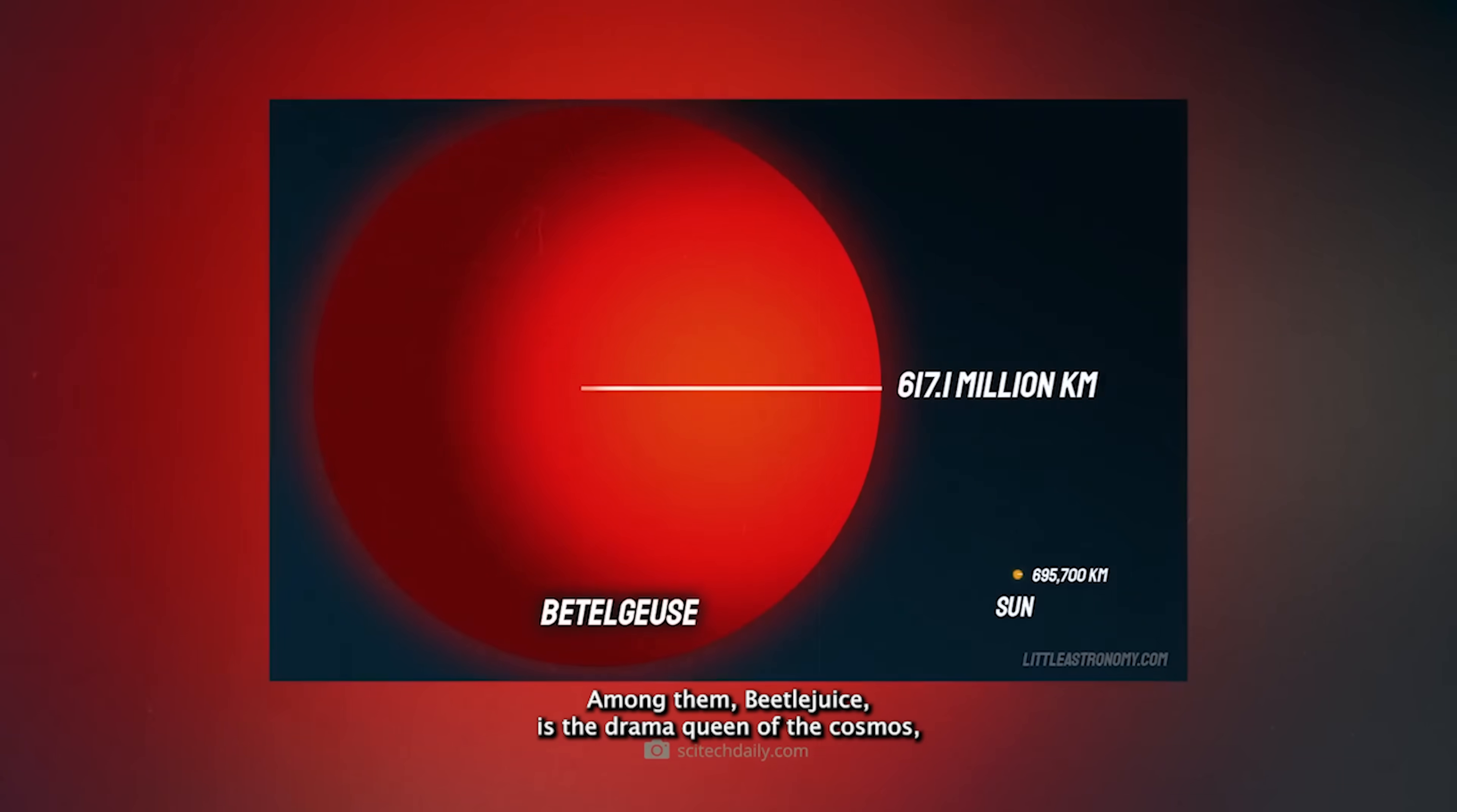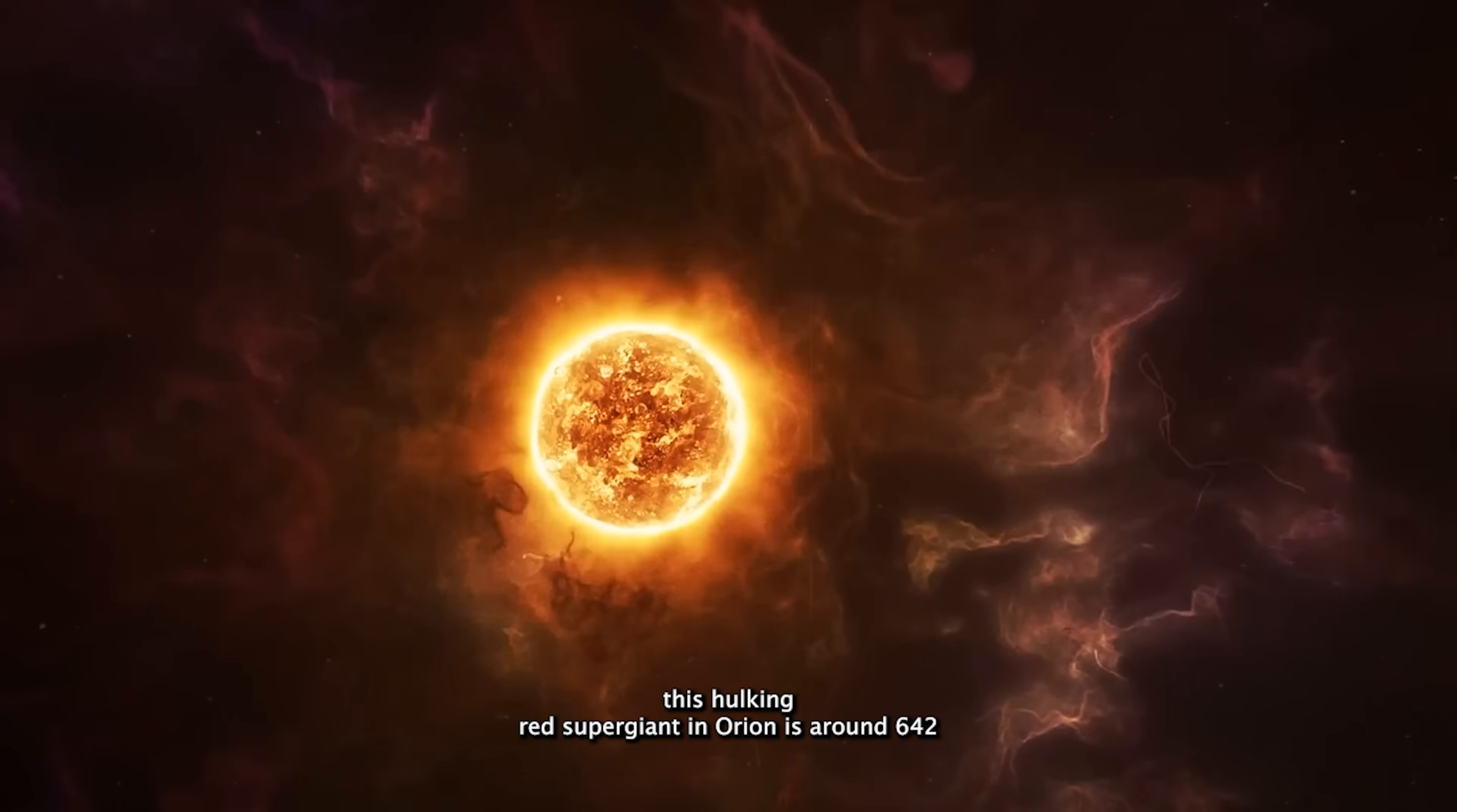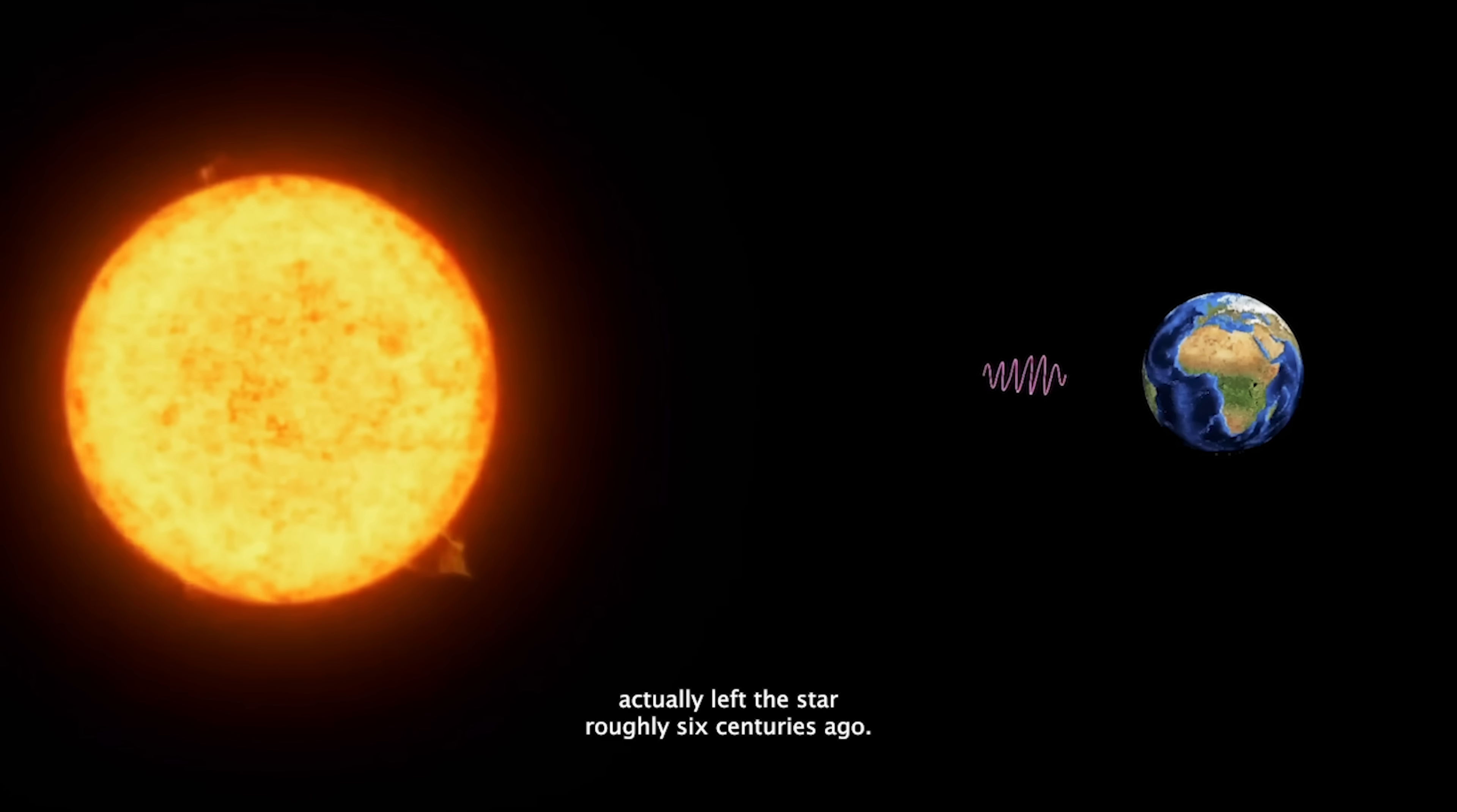Among them, Betelgeuse is the drama queen of the cosmos. This hulking red supergiant in Orion is around 642 light-years away, which means the light you see from it tonight actually left the star roughly six centuries ago.